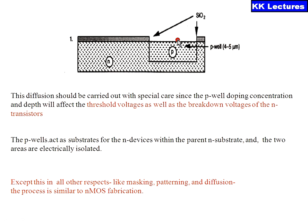We are going to take proper care whenever we are forming the well — it should be a maximum of 4 to 5 micrometers thickness only. The P-Well will act as a substrate for the N-device within the parent N-substrate, and the two areas are electrically isolated. The area where we are forming the P-type transistor and the area where we are forming the N-type transistor are both electrically isolated. In all other respects — masking, patterning, and diffusion — the process is similar to the N-MOS process.